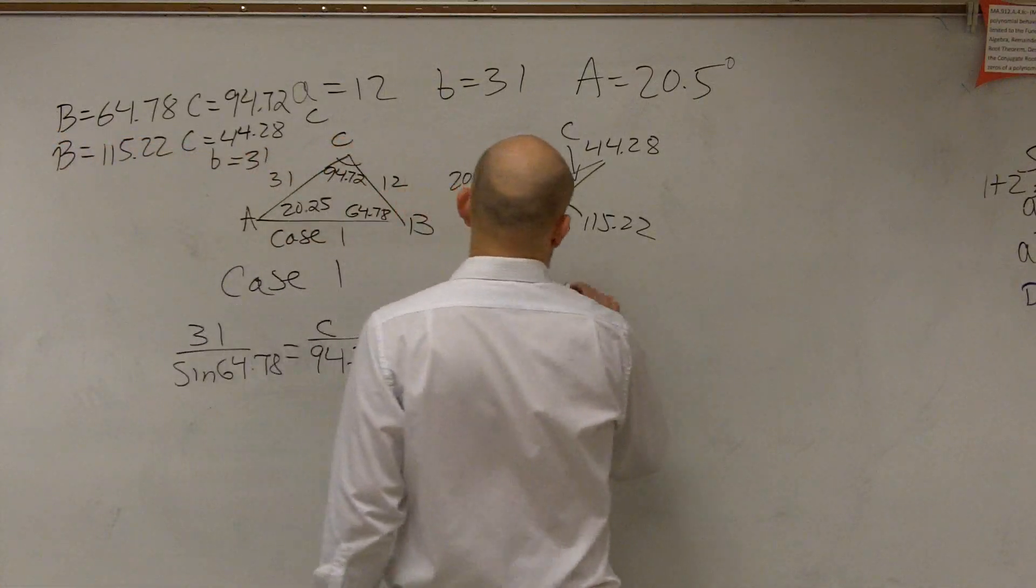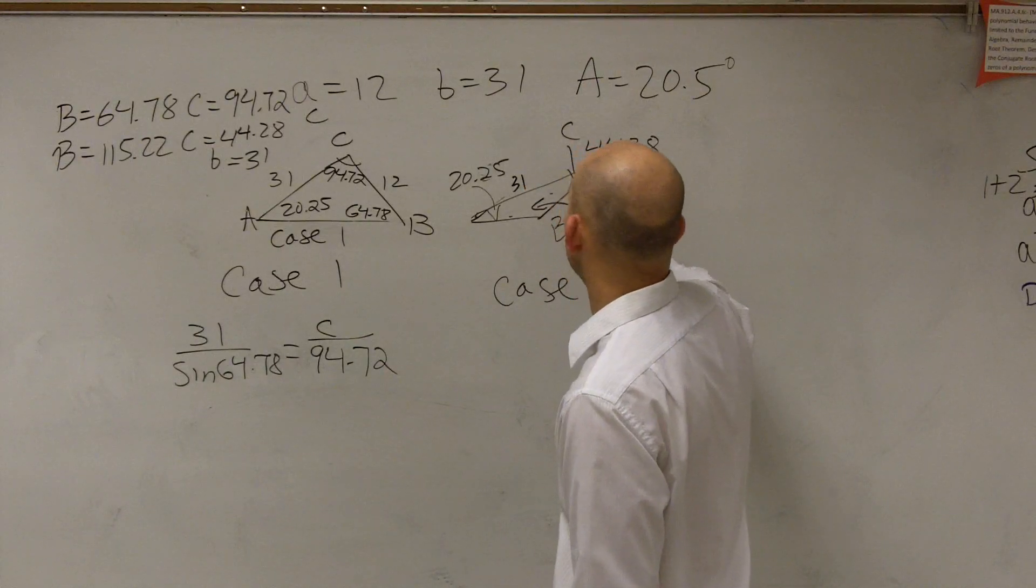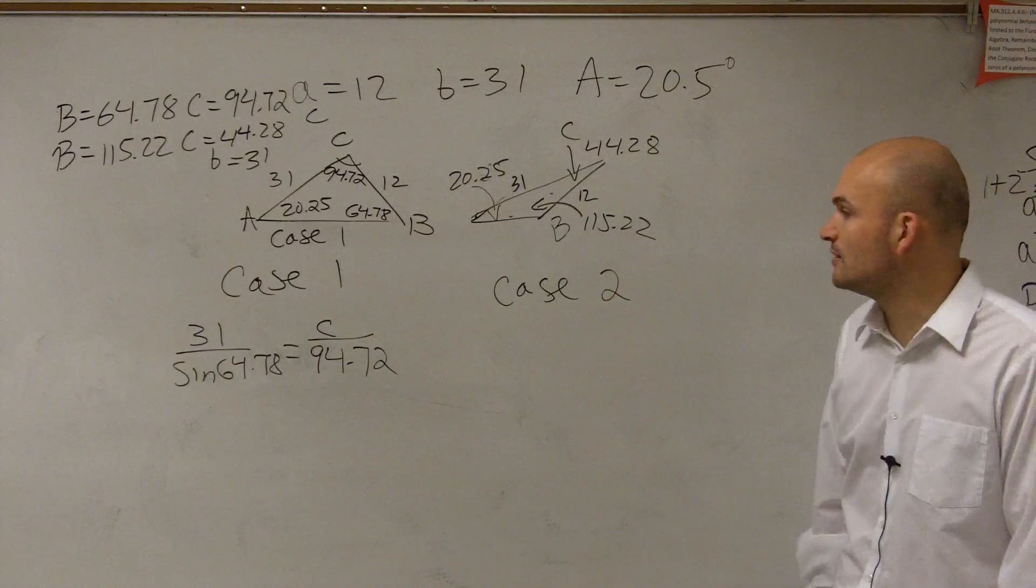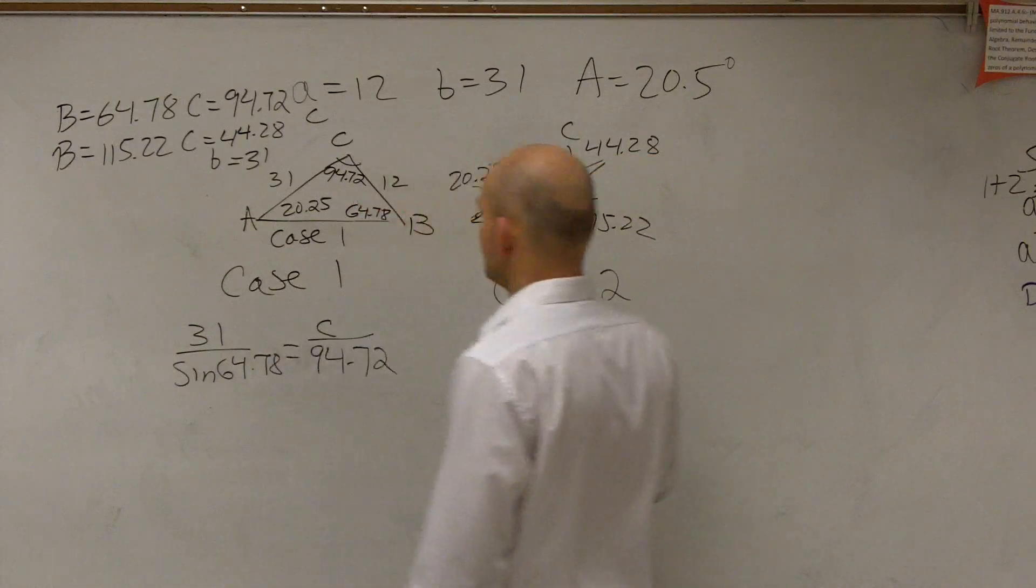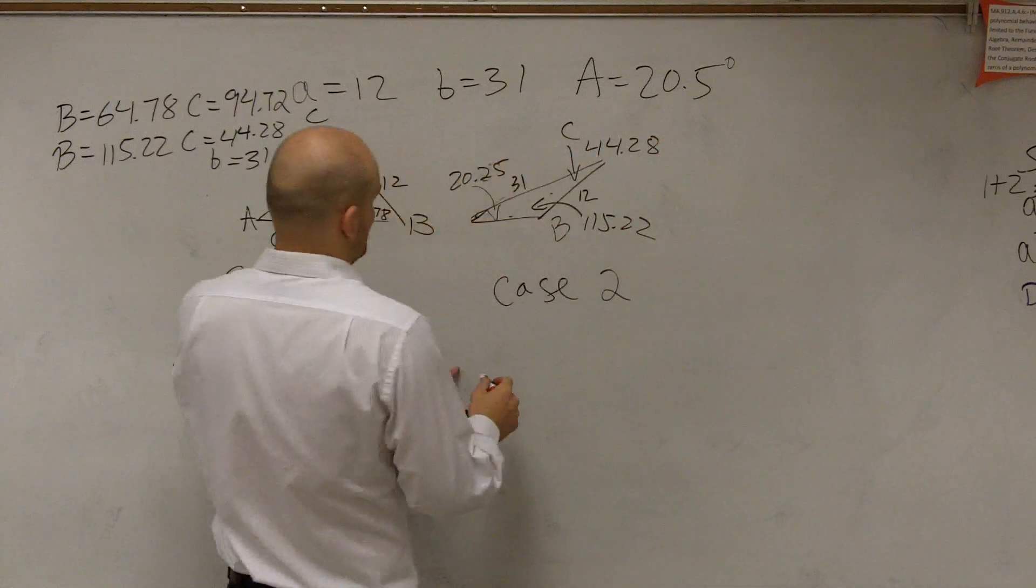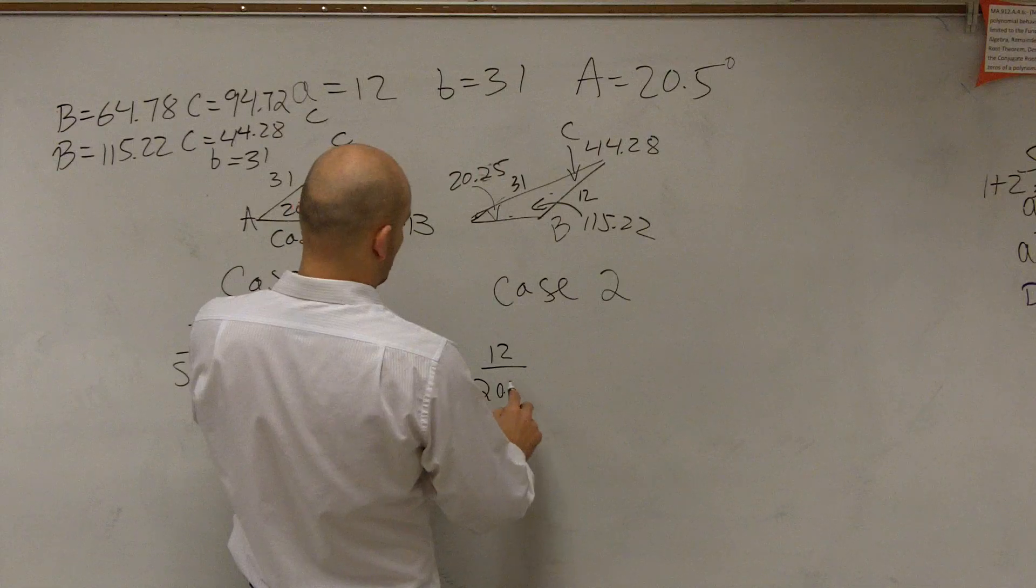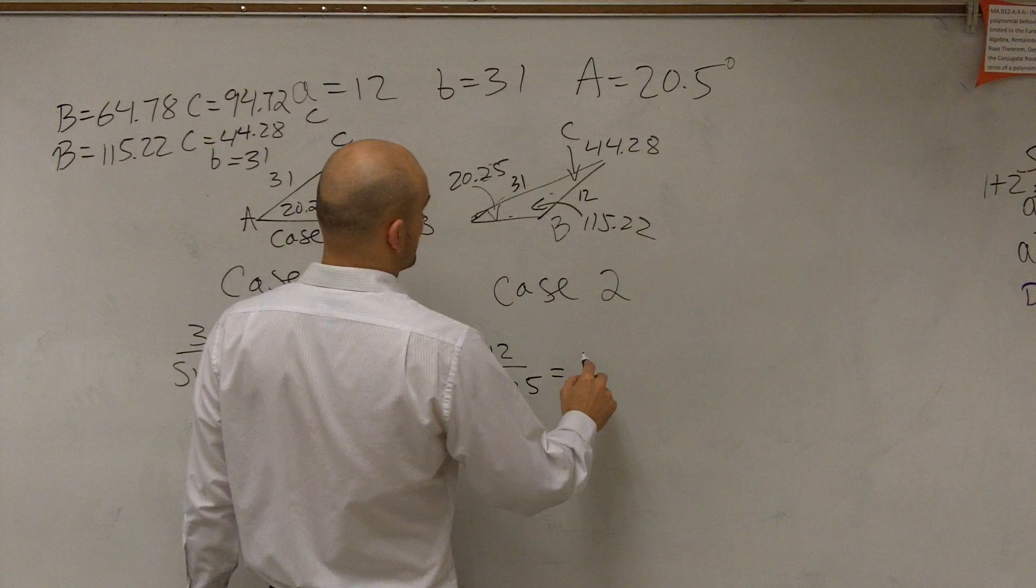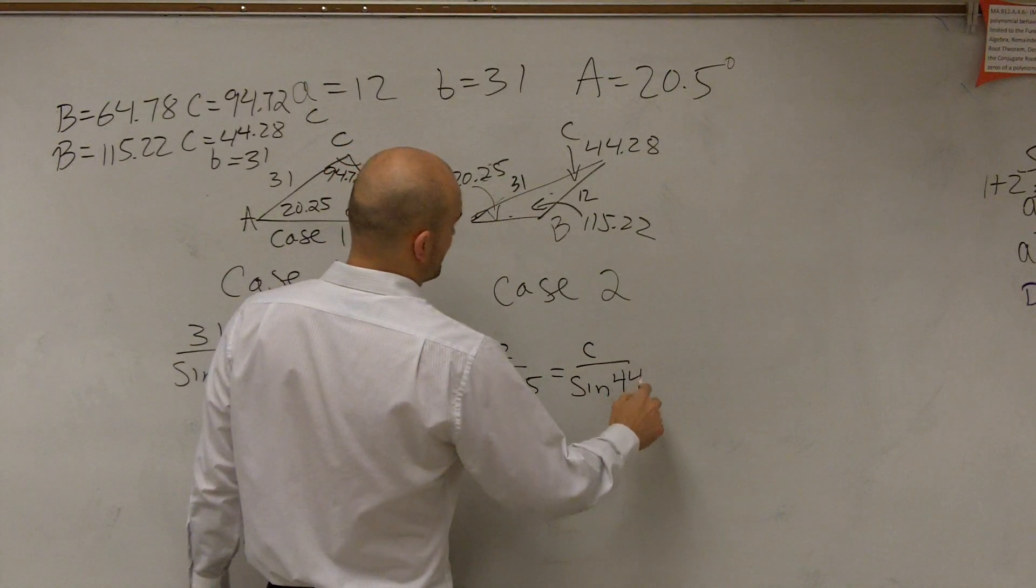And then for case two, again, we don't know what the c value is, as this is 31 and this is 12. We don't know what c is. So again, we're going to use another ratio. Again, you can still use the ratio of a. In this case, let's do b. So I'll do, actually, I did b. I did b. So this one, let's do a. So I'll do 12 over the sine of 20.5 equals c over the sine of 44.28.